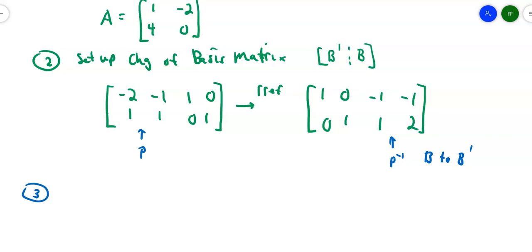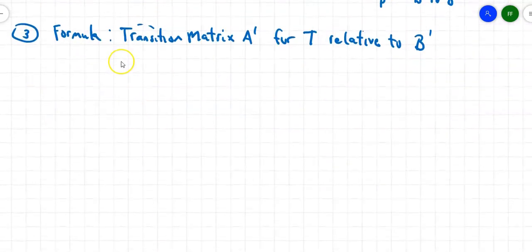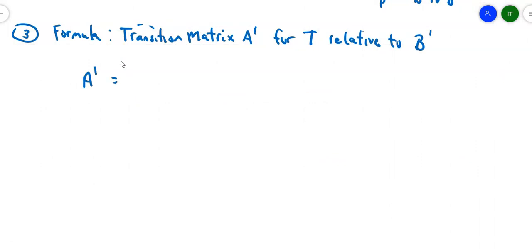Step 3 is I need a formula. That formula says that the transition matrix A' for T relative to B'. The original matrix, that 1, -2, 4, 0, that's the transformation relative to basis B, the standard ordered basis. I would like to find the transition matrix A' for the transformation relative to B'.